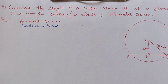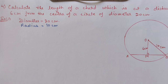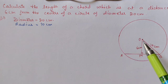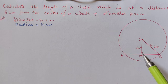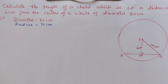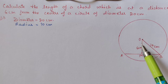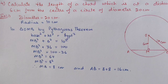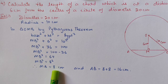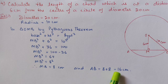Question 4: Calculate the length of a chord at a distance of 6 cm from the center of a circle with diameter 20 cm. We draw the figure with chord AB at a distance of 6 cm from the center. Since the diameter is 20 cm, the radius is 10 cm. Triangle OMB is a right-angle triangle, so we use the Pythagorean theorem to find MB. After calculation, MB = 8 cm, so the chord AB = 16 cm.